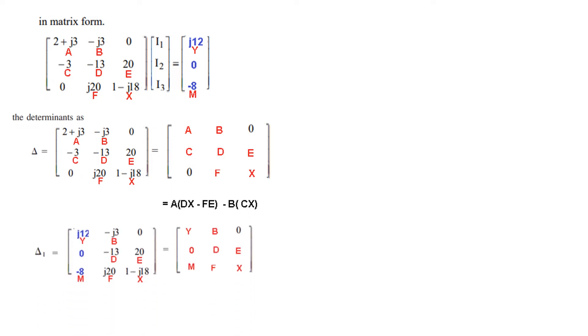Now for delta 1, the only thing I have to do is change the first column with the output. This was the output, so we bring it at the place of the first column. Then again we just copy the variables here and write the equation. So it will be Y(DX - FE), similarly minus B(0 - ME). This is how we got the delta 1 equation.